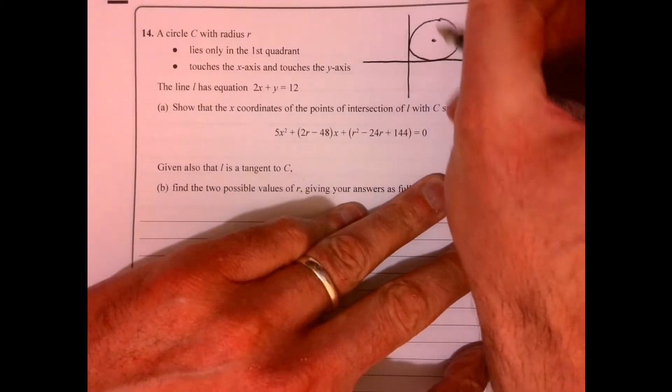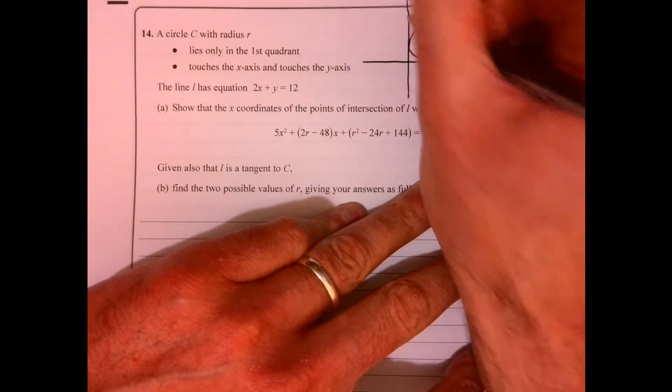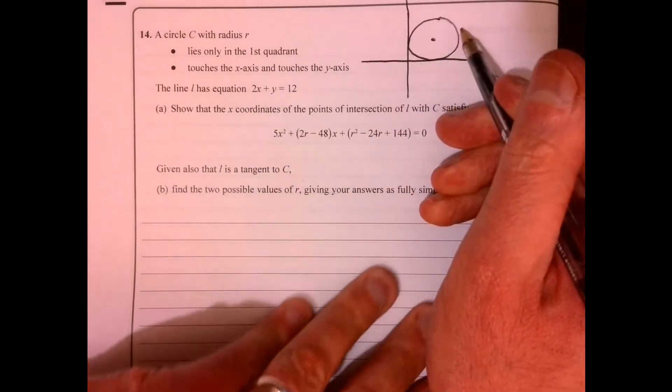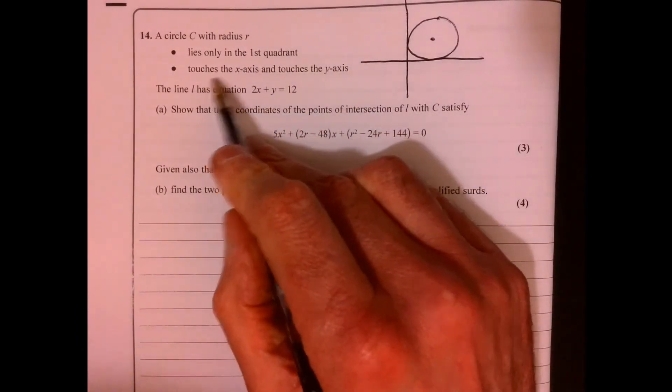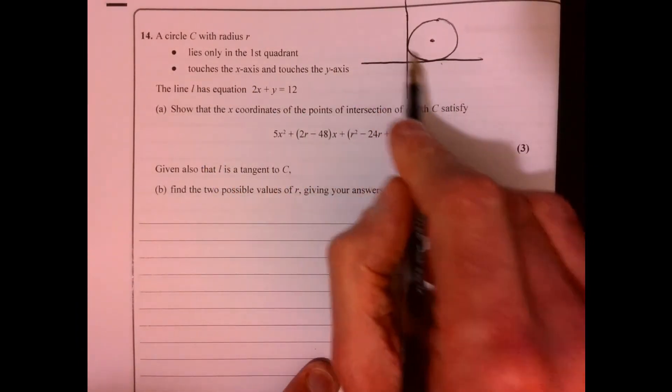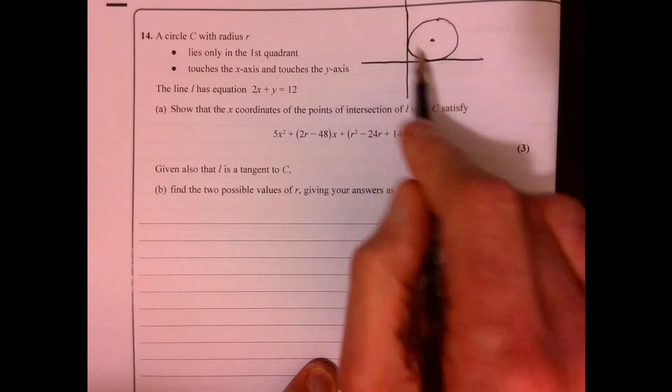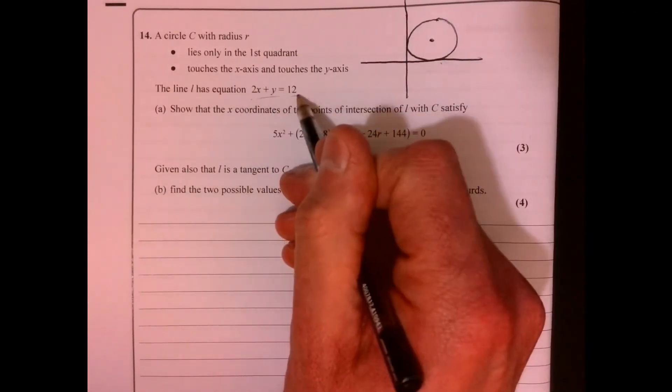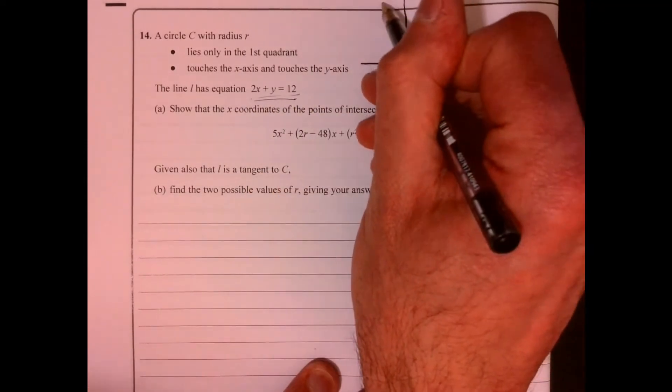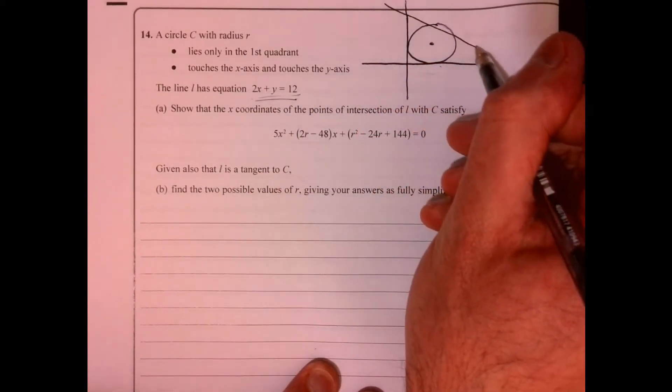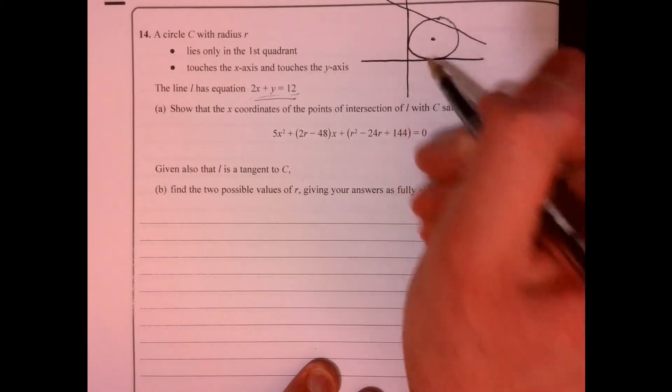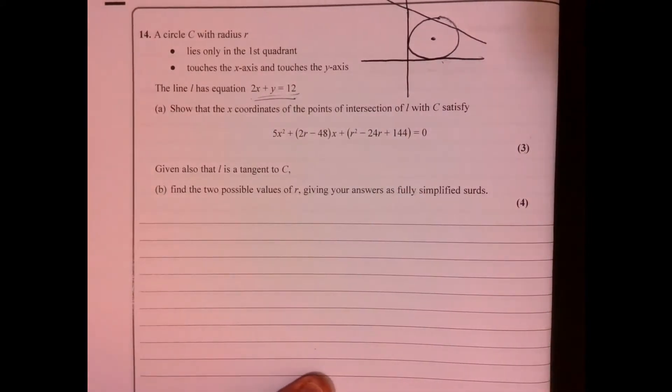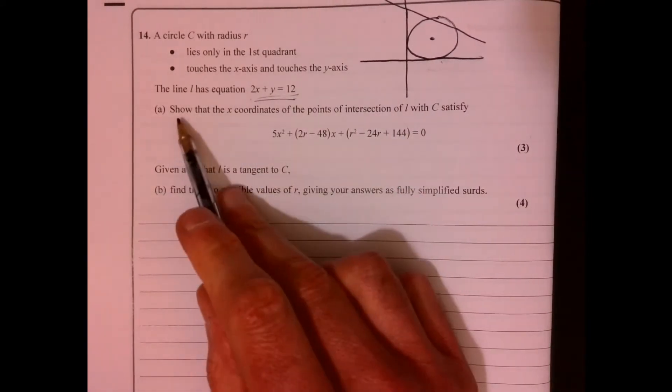So let's just picture what on earth's happening here. We've got the equation of a circle, and it tells us that it touches the x-axis and touches the y-axis, so it's sitting something like this here. And then you've got this line, it might go something like that. Obviously we don't know the size of the circle.